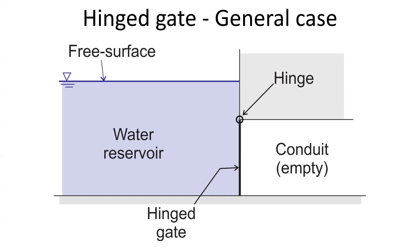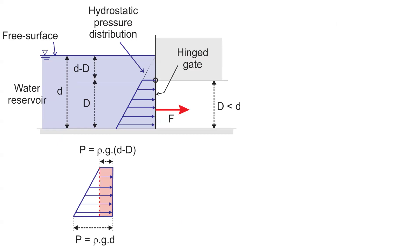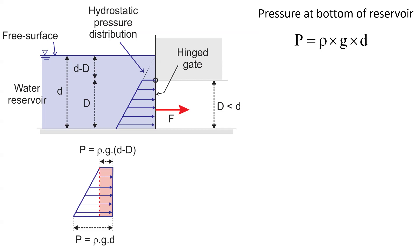Now let us consider the more general case whereby the water depth in the reservoir is higher than the internal height of the conduit. As before, the pressure is atmospheric at the water surface of the reservoir, and the pressure at the bottom of the reservoir is rho g d (small d for the water depth). On the gate itself, the pressure distribution is no longer triangular but trapezoidal.